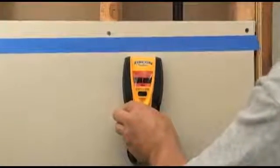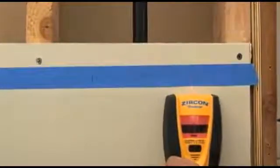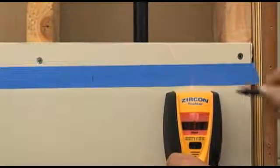As the unit approaches metal, the bars on the display will come together. Simply mark where you first get the strongest reading, reverse direction, and mark where the tool again shows the strongest reading.